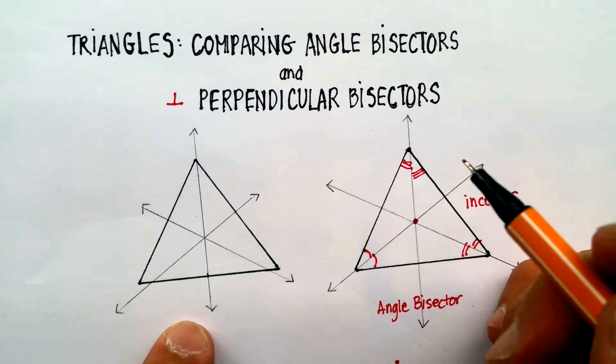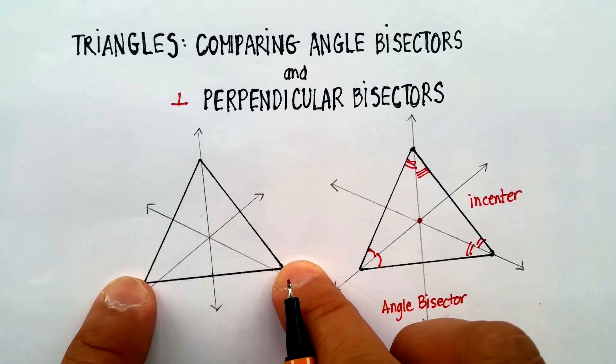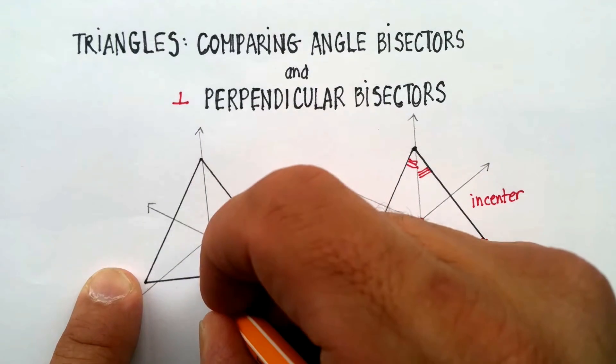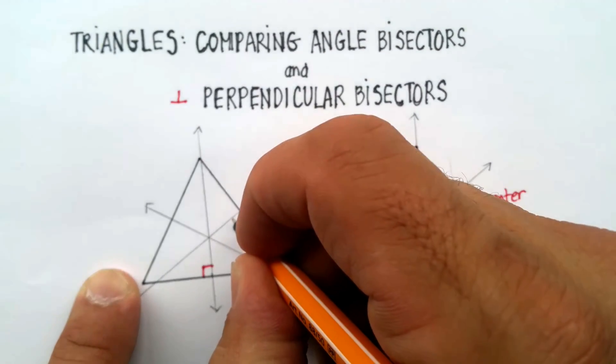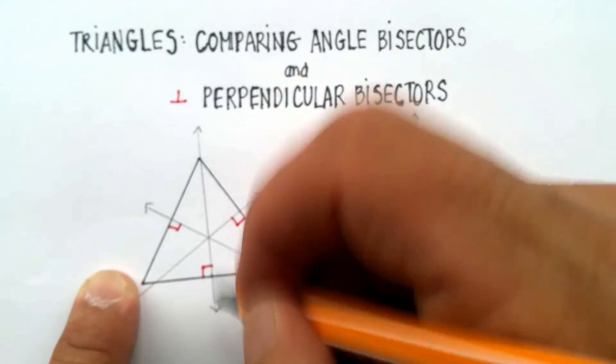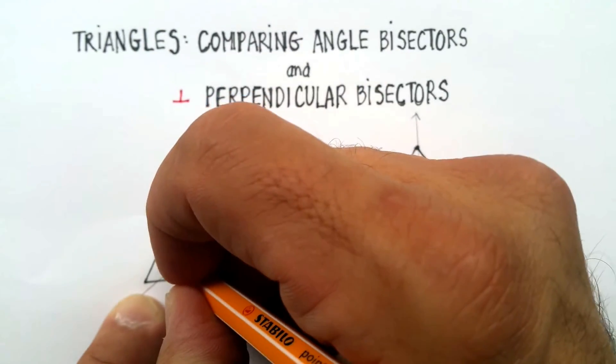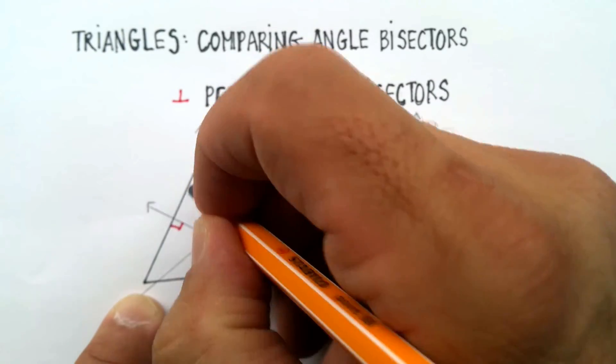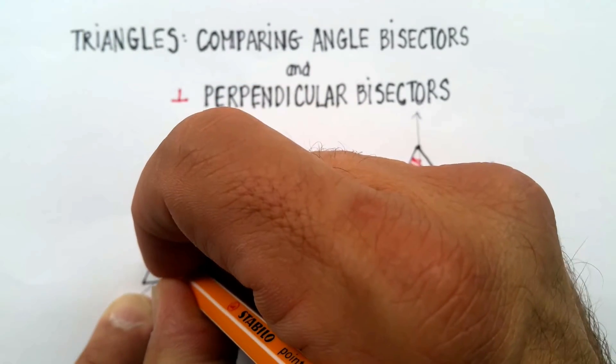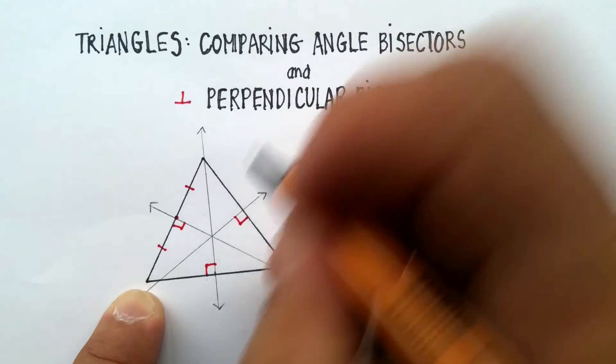Now, a perpendicular bisector actually starts in the middle of the side of a triangle. Remember, that's the difference. This one's an angle, this one's actually for the side, and it forms a 90-degree angle with the line inside itself. The other thing that it does is it creates two equal halves on either side. So, this is actually like the midpoint of the side, so that this segment here would be equal to that segment here.